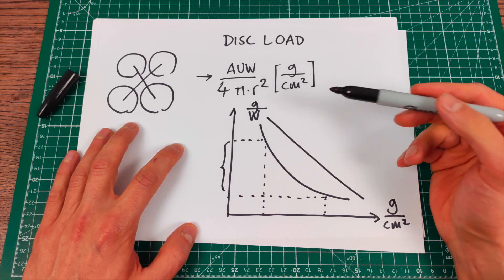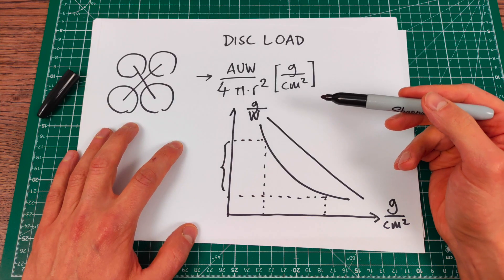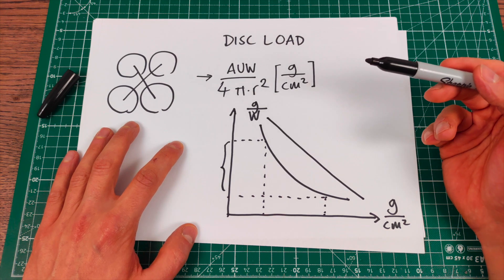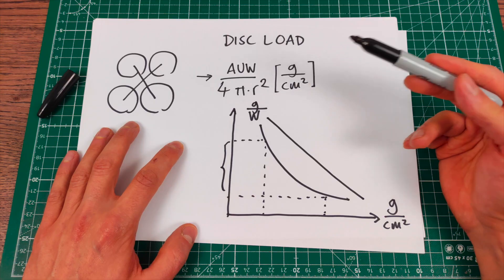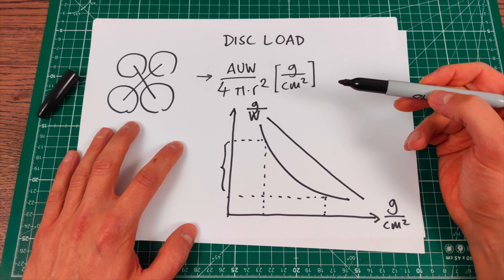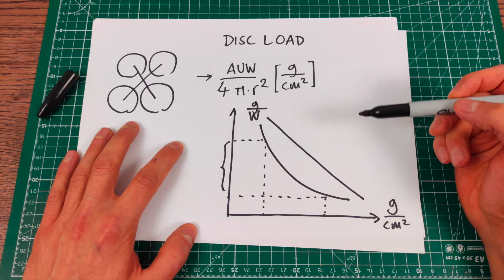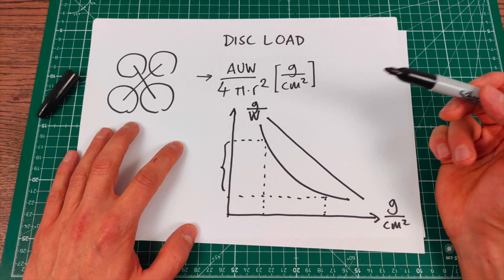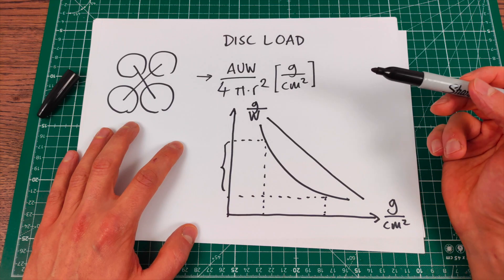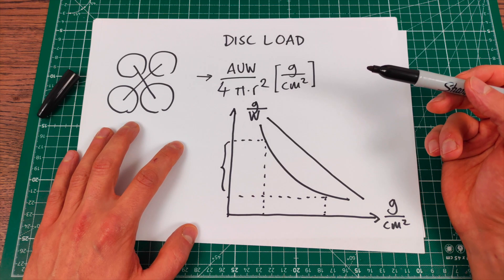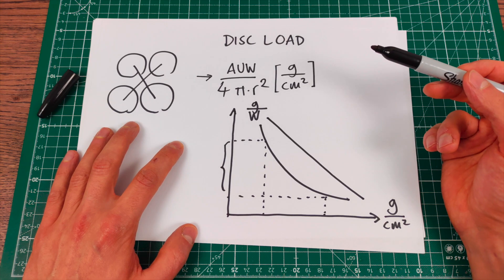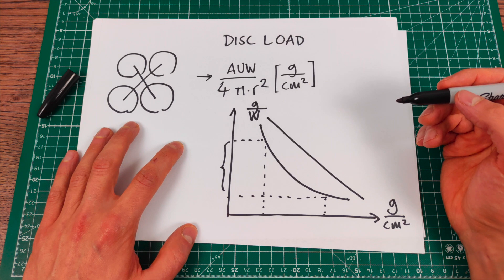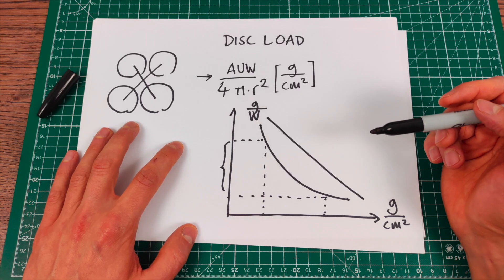This is why disk load is pretty interesting for any long-range platform. Another factor to consider is that disk load also affects how the quad feels. Low disk loads tend to make it less locked in and more floaty, while higher disk load helps. There's sort of a sweet spot in terms of disk load, which for most people is around a regular 5-inch quad with maybe a 500 to 600 gram take-off weight. That's the sweet spot in terms of flight characteristics and feel, but it's not the maximum efficiency that can be gained.